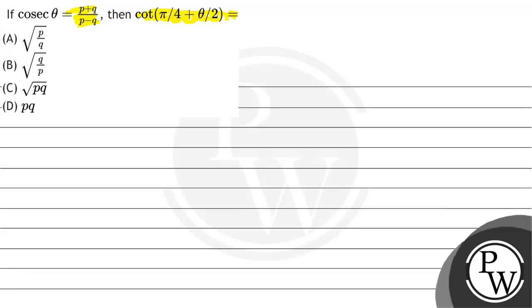The first option is root over of p by q, then root over of q by p, then option C will be root pq, and option D will be another concept.